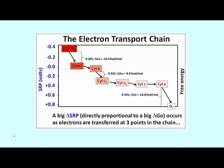The graph in this slide plots the free energy and standard reduction potential of the electron transport system components, highlighting the fact that free energy and the standard reduction potential are directly proportional, and showing that there are three redox reactions with large drops in free energy.